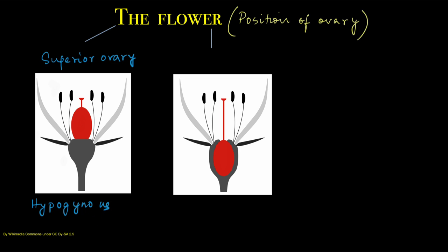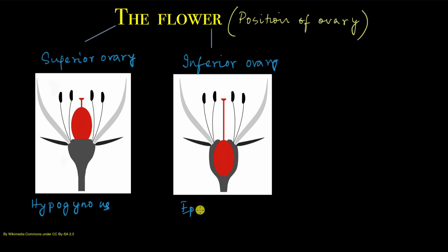The opposite of this is epigynous, in which the ovary is below the rest of the parts of the flower. Here the ovary is below all of the other things — the sepals, petals, and stamens. This kind of ovary is said to be an inferior ovary, and the flower is said to be epigynous. 'Epi' means above, so the rest of the parts of the flower are above the ovary — hence epigynous.